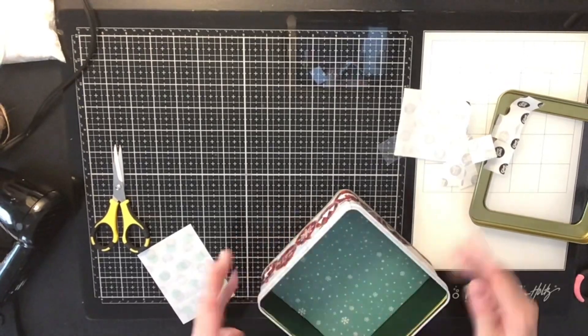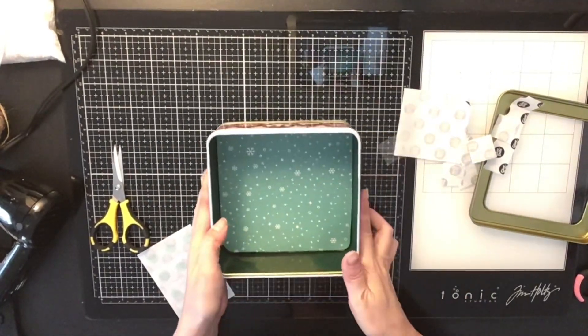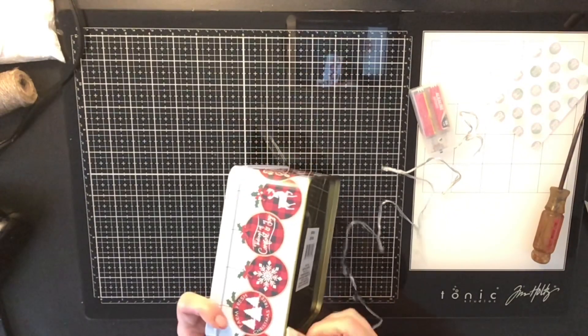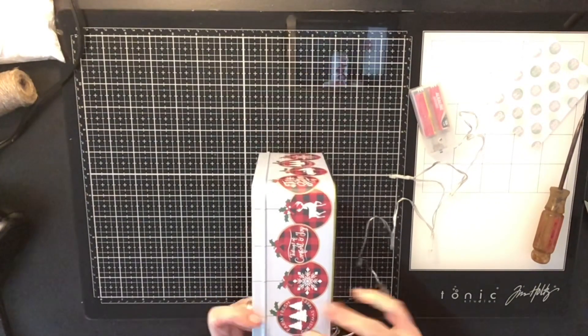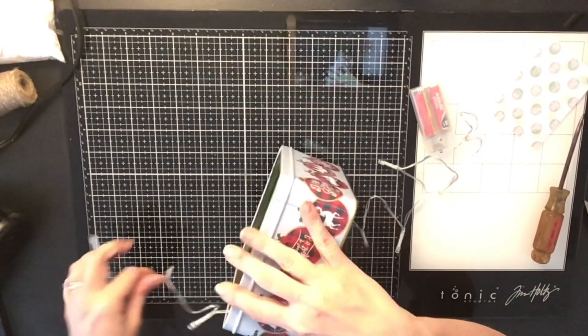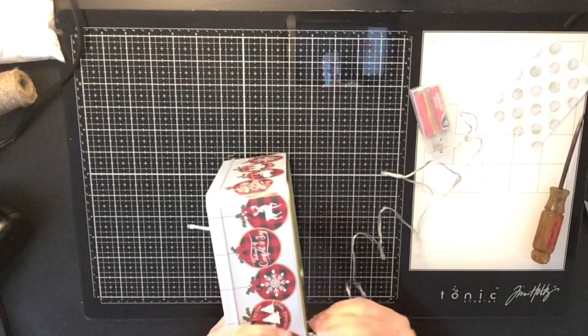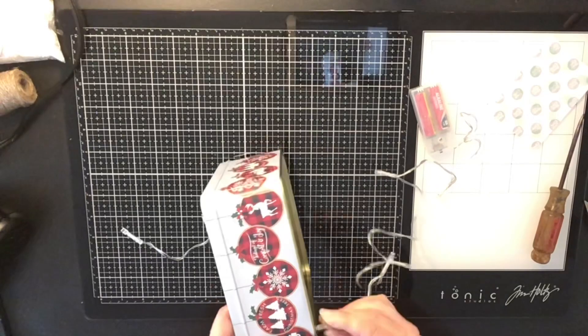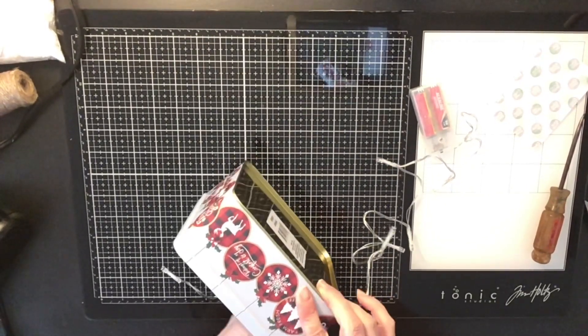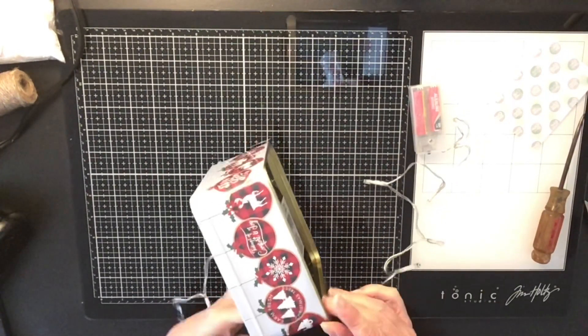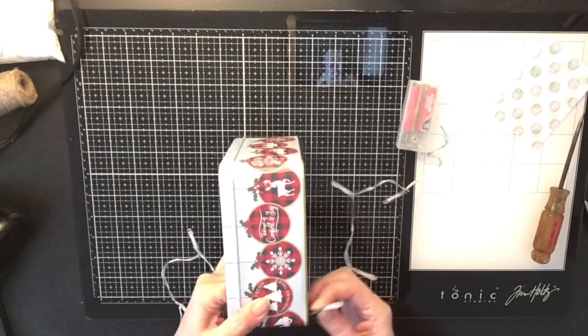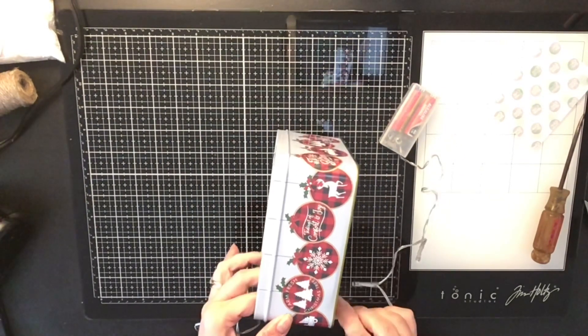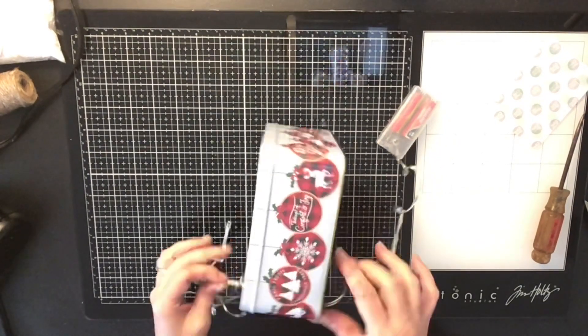And next I'm going to take my string of lights which I also purchased from the Dollar Tree. And they're just battery operated lights. Sometimes you can get the copper ones which are really easier to pull through. I had to make my hole a little bit bigger because these were a little bit bigger lights. But it's okay. It all worked. I just made my piercing tool and I kind of moved it around. The tin is really easy to bend and make the hole bigger. And I'm just stringing them through my tin.